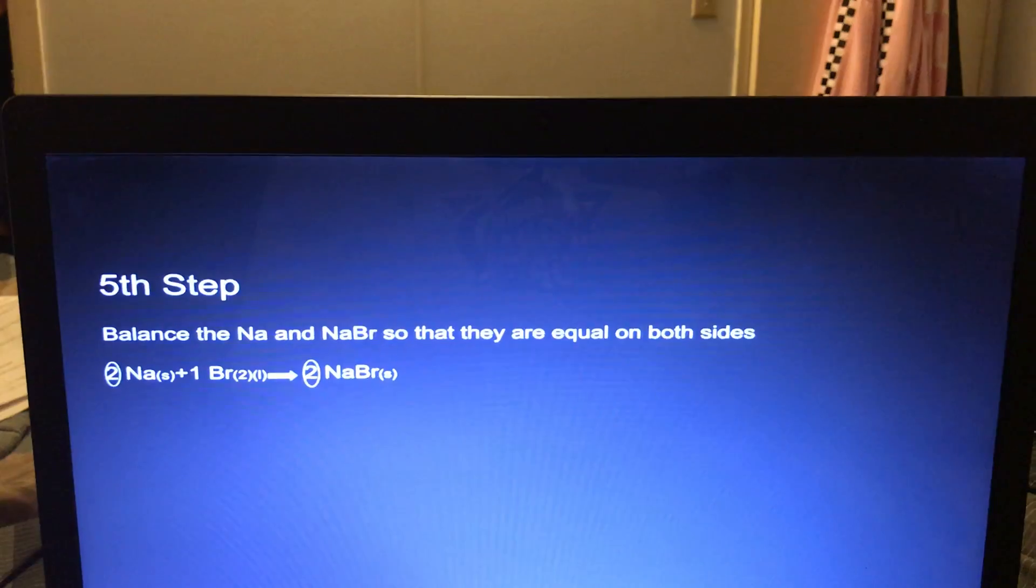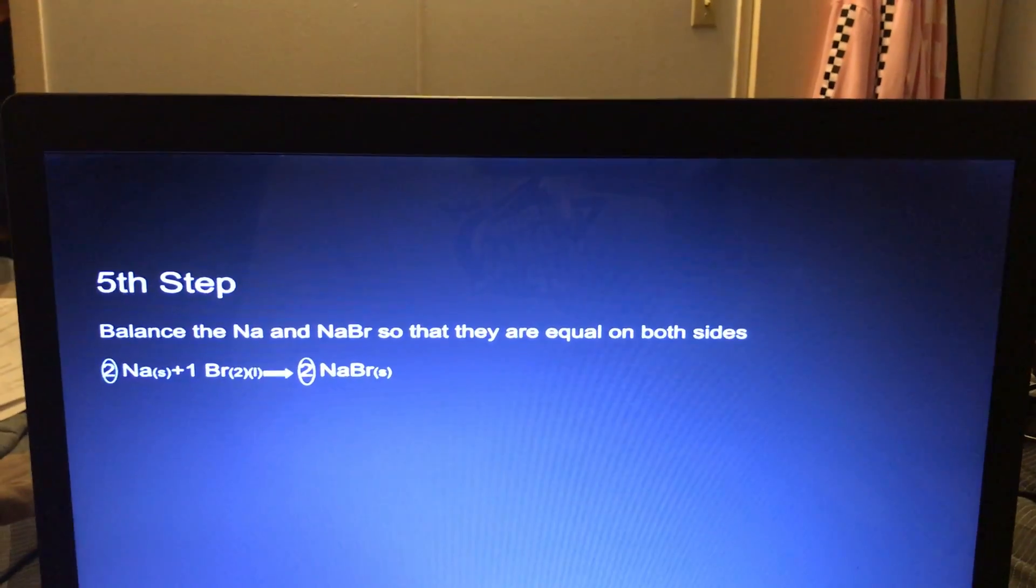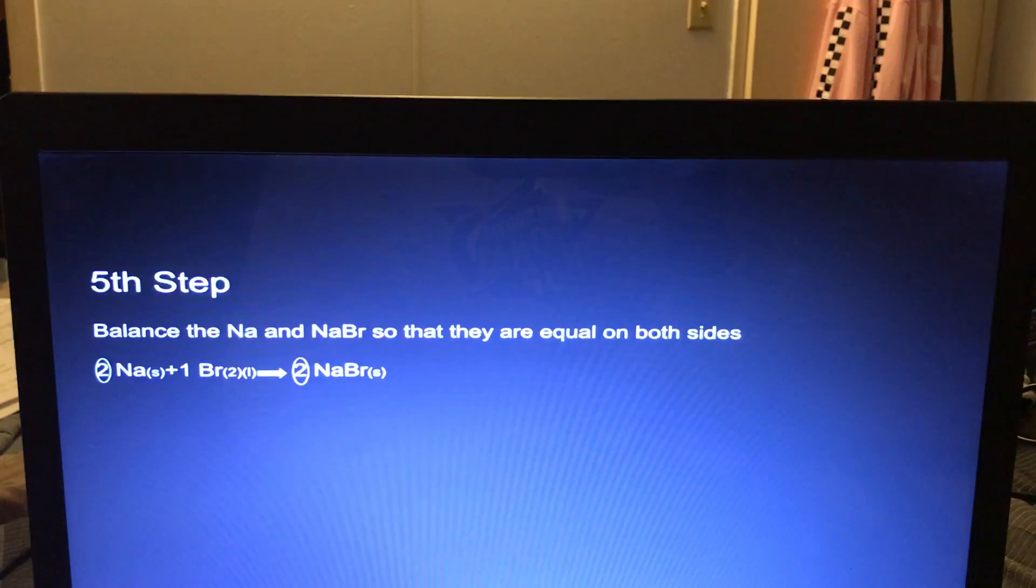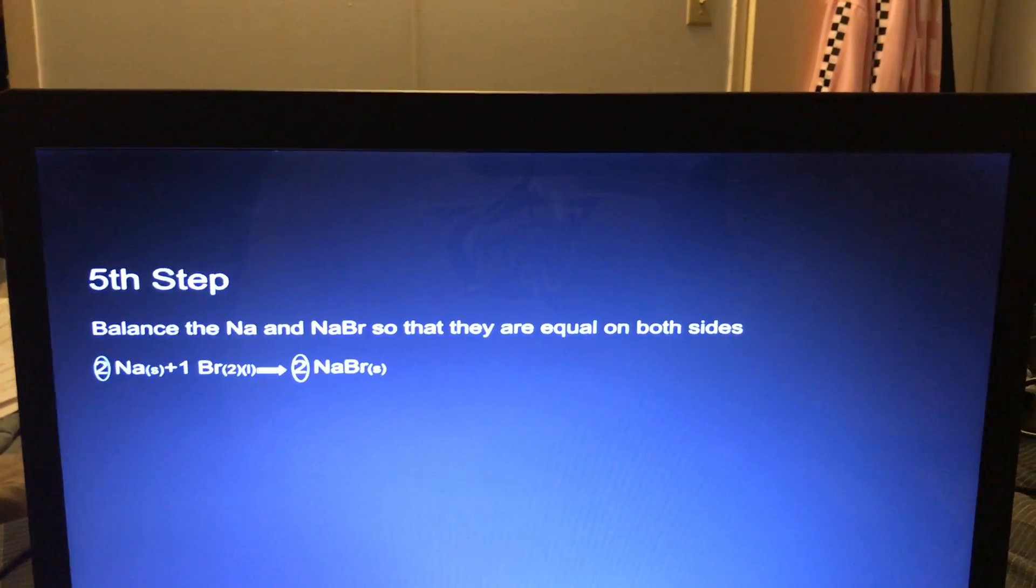The fifth step would be to balance the coefficients that were in the previous slide by putting a 2 in front of the Na, and putting the 2 in front of the NaBr, so that the 2 is evened out, and the 2 for the subscript for the Br is evened out also.